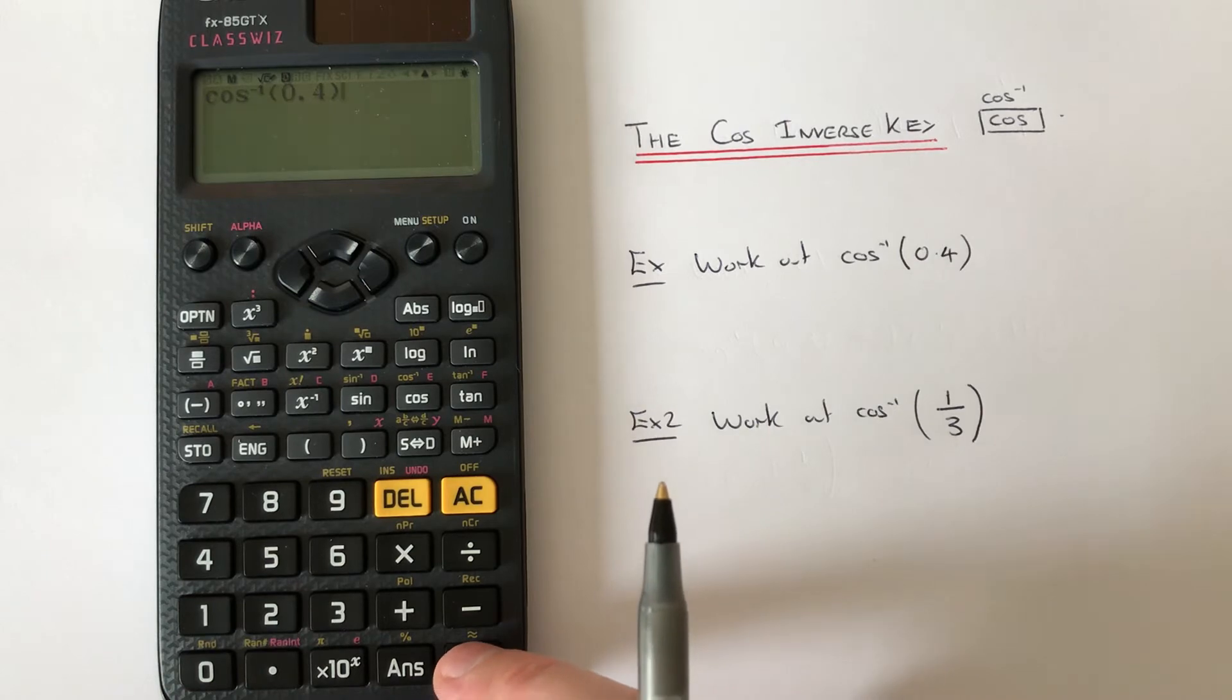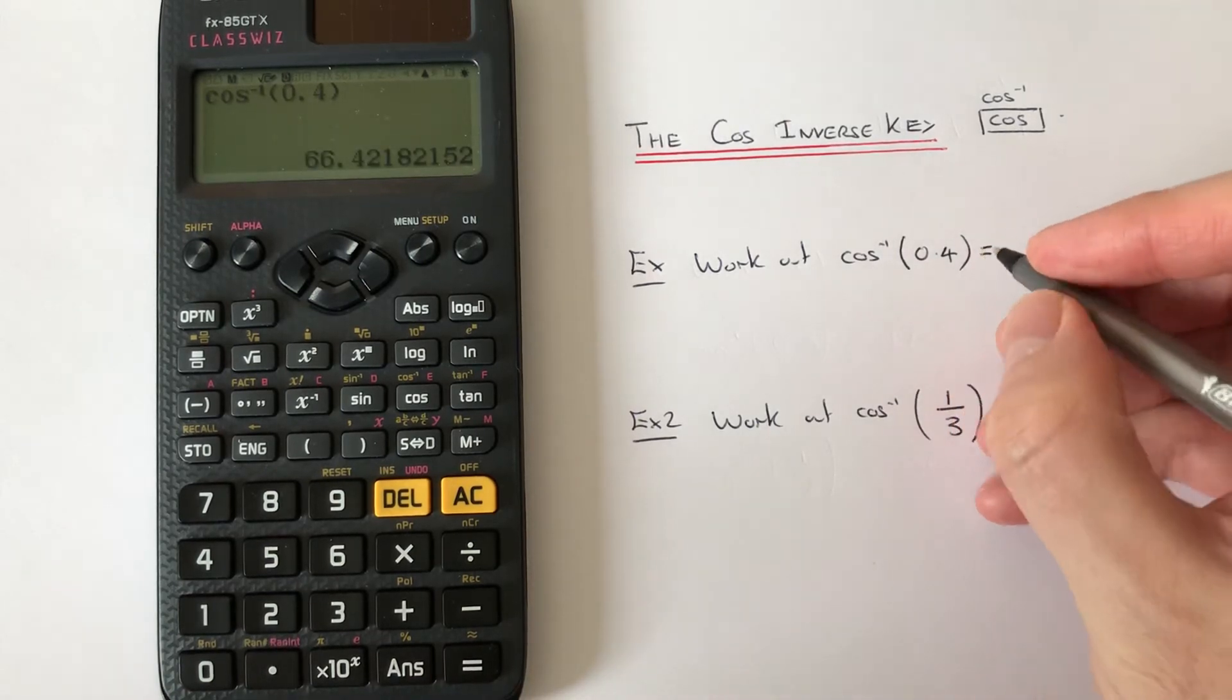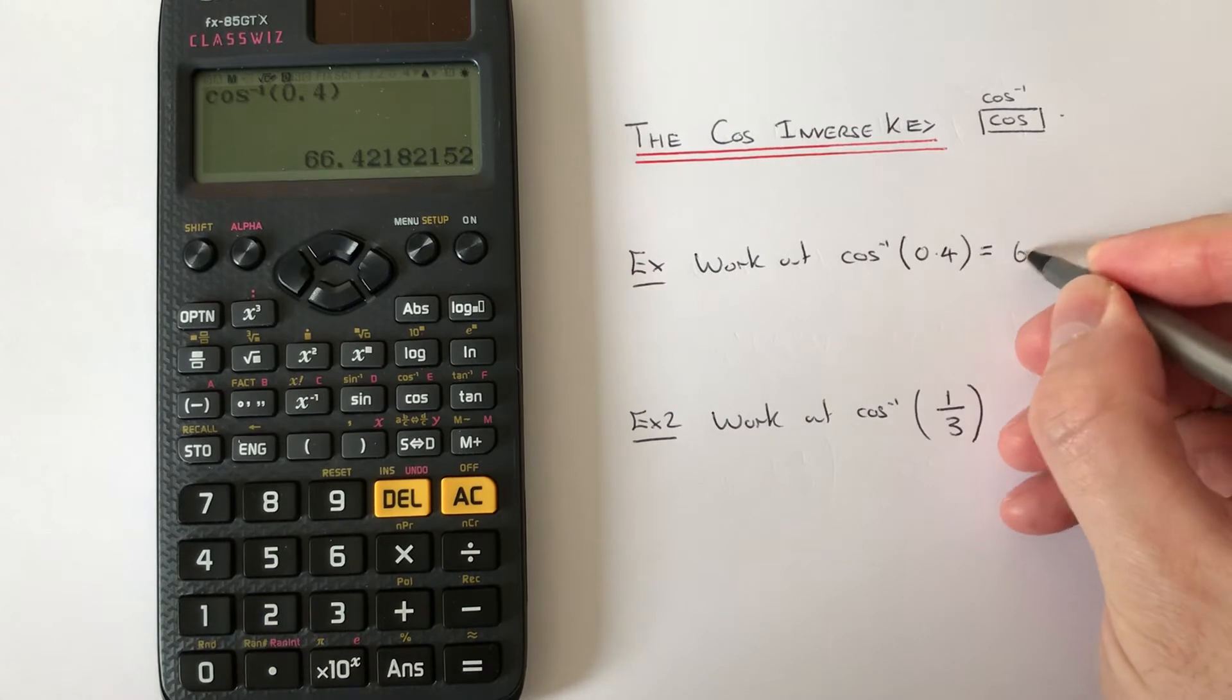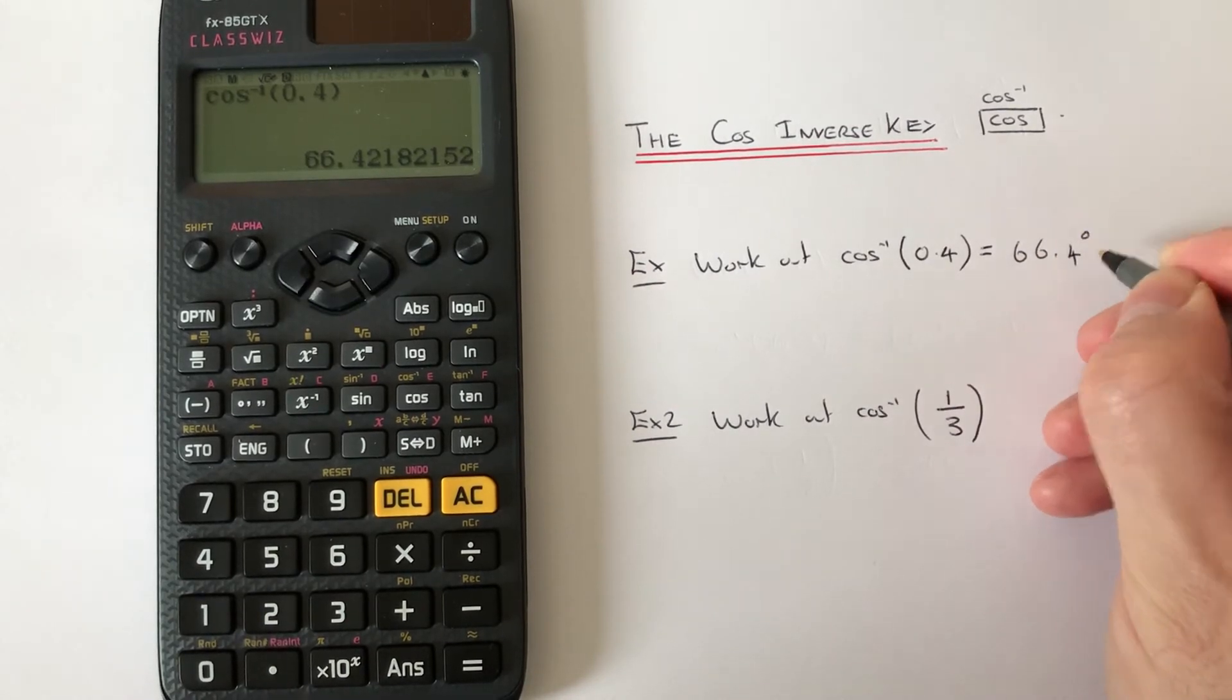Press the equals and it converts it to an angle, and we get 66.4 degrees. So let's have a look at the second example then. Press AC.